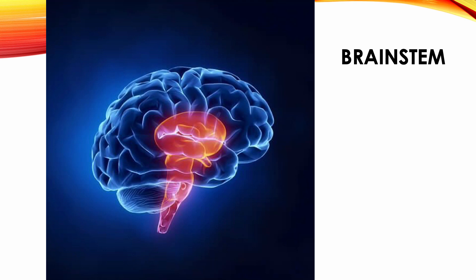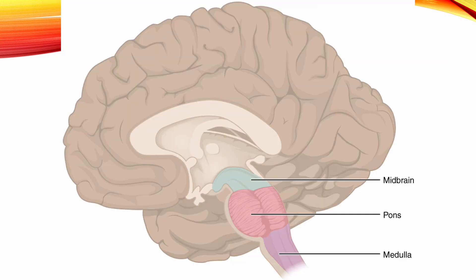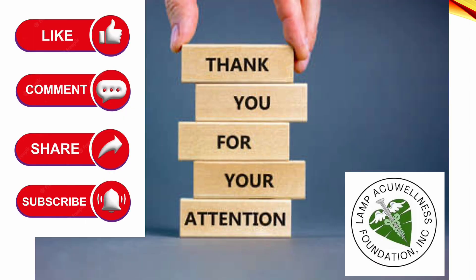Brainstem. The cerebral hemisphere and cerebellum hide the brainstem. The brainstem contains the midbrain, pons, medulla oblongata, and third and fourth ventricles that extend to the spinal cord. There are many motor and sensory nuclei and cranial nerves attached to the brainstem. The brainstem is an important part of the vital center. Thank you very much for your attention and see you on our next videos.